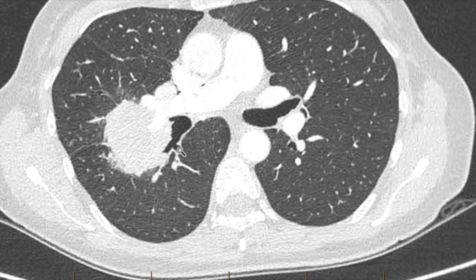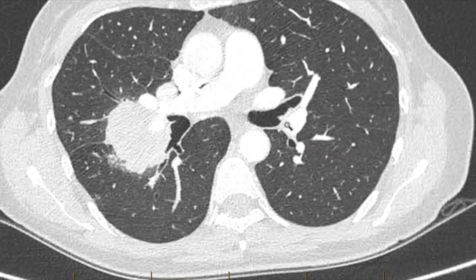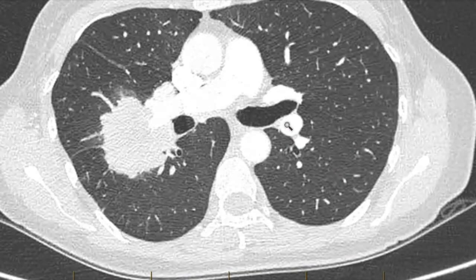Here's the apical segment here coming off posteriorly, and this has three branches. Here's the C branch and the B branch here. Looks as if that comes to an abrupt dead end, so there may actually be an endobronchial lesion there. The bronchoscope can probably reach to about here, so we may see that. We'll have to have a careful look there.